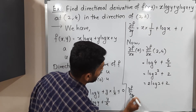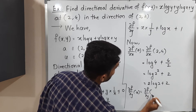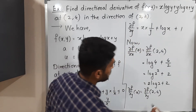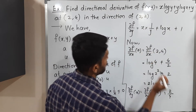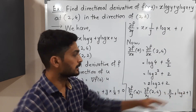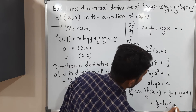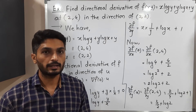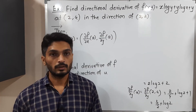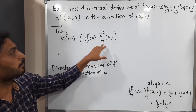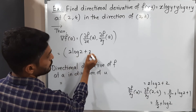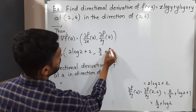Now ∂f/∂y at point a = (2,4): putting x=2 and y=4, we get 2/4 + log(2) + 1 = 1/2 + log(2) + 1 = 3/2 + log(2). So ∇f(a) = (∂f/∂x at a, ∂f/∂y at a) = (2·log(2) + 2, 3/2 + log(2)).